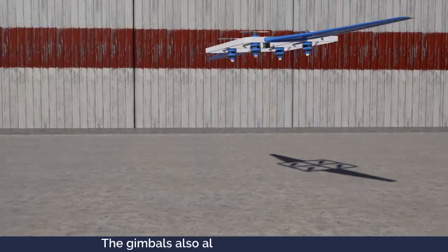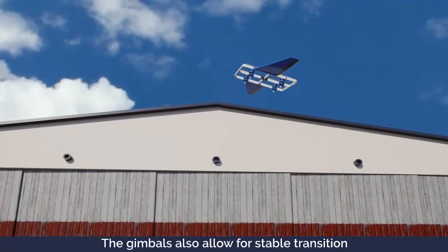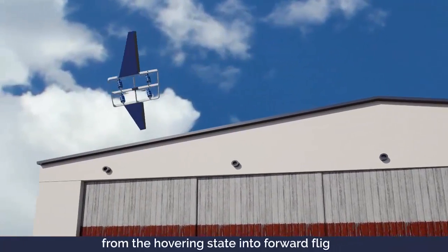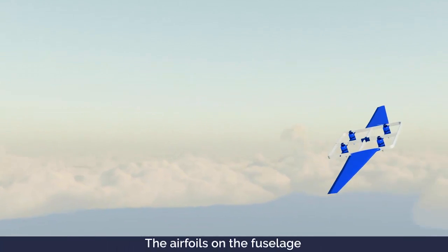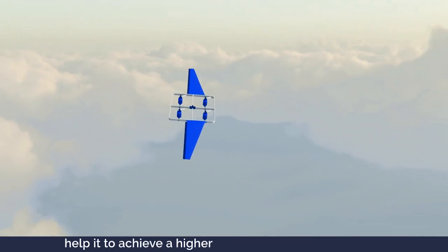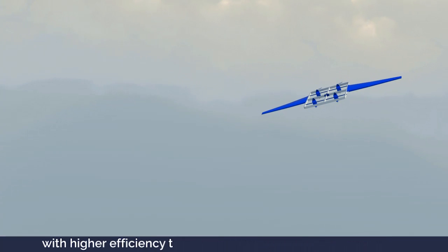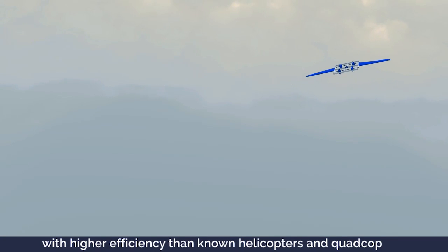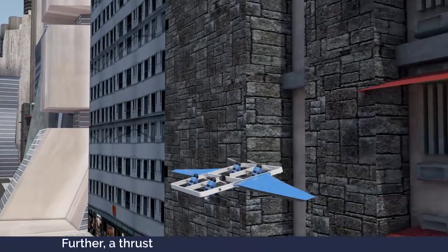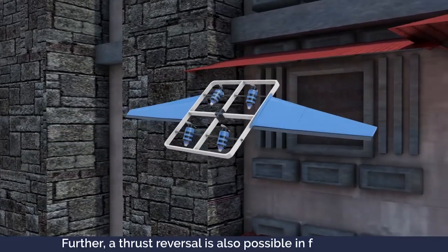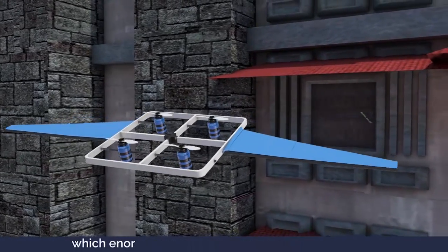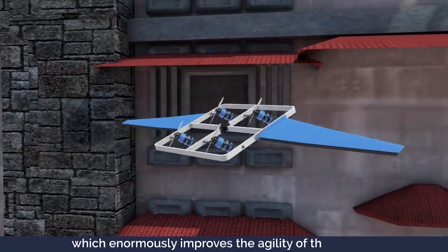The gimbals also allow for stable transition from the hovering state into forward flight. The airfoils on the fuselage help it to achieve a higher flight velocity in forward flight with higher efficiency than known helicopters and quadcopters. Further, a thrust reversal is also possible in forward flight which enormously improves the agility of this aircraft.